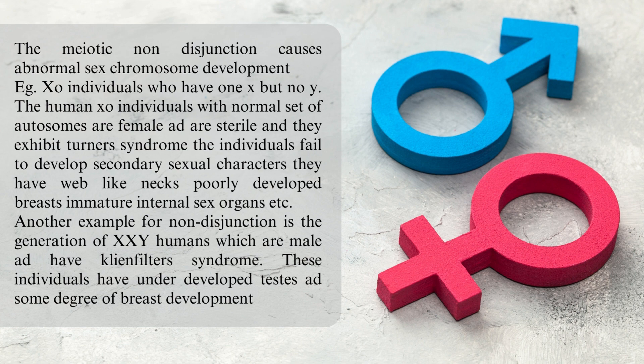Another example of non-disjunction is the generation of XXY humans, who are male and have Klinefelter's syndrome. These individuals have underdeveloped testes and some degree of breast development.